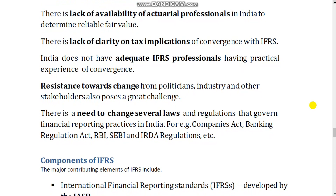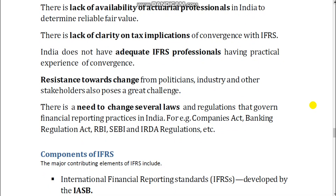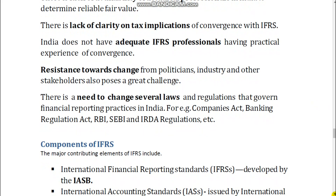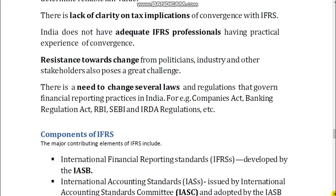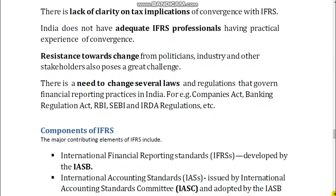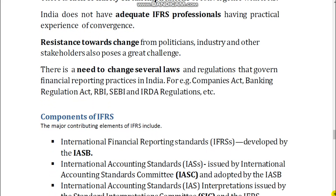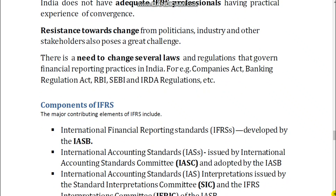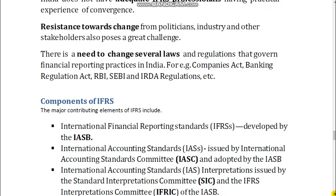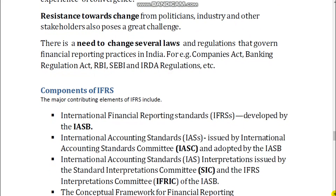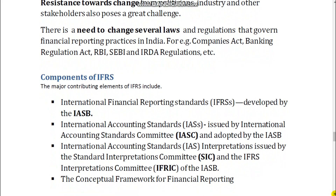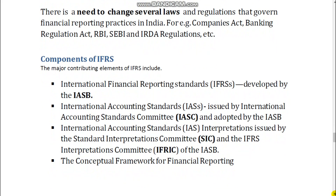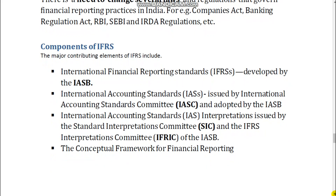Components of IFRS. The major contributing elements of IFRS include: International Financial Reporting Standards, IFRSs, developed by the IASB; International Accounting Standards, IASs, issued by the International Accounting Standards Committee, IASC, and adopted by the IASB; IAS interpretations issued by the Standard Interpretations Committee, SIC, and the IFRS Interpretations Committee, IFRIC, of the IASB; and the Conceptual Framework for Financial Reporting.